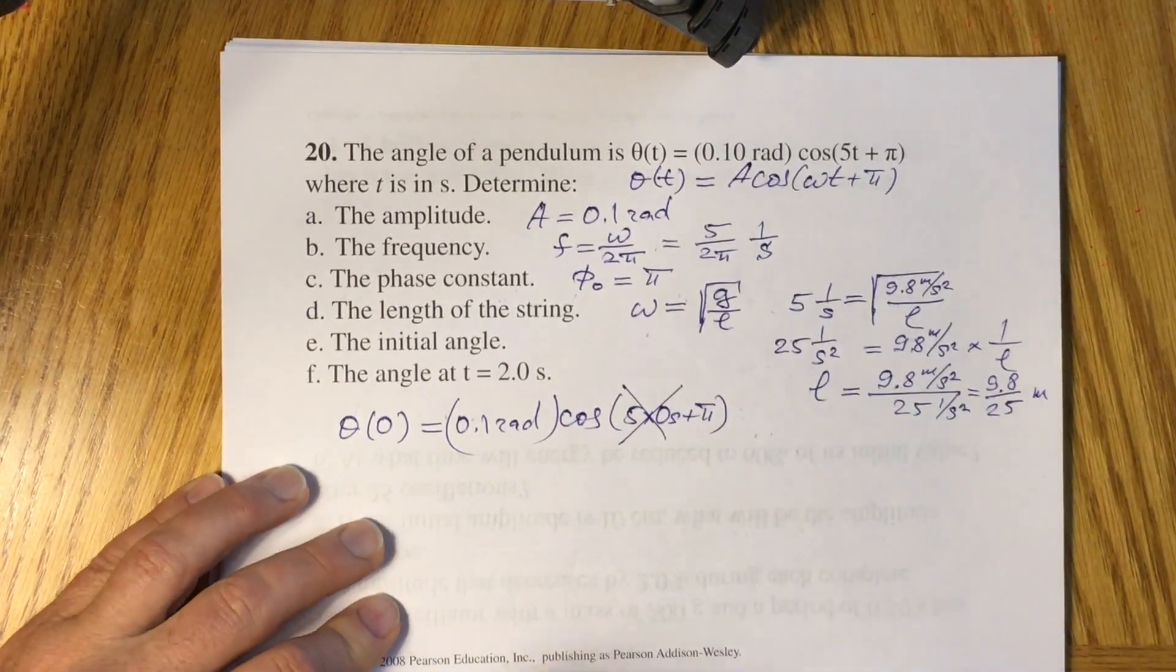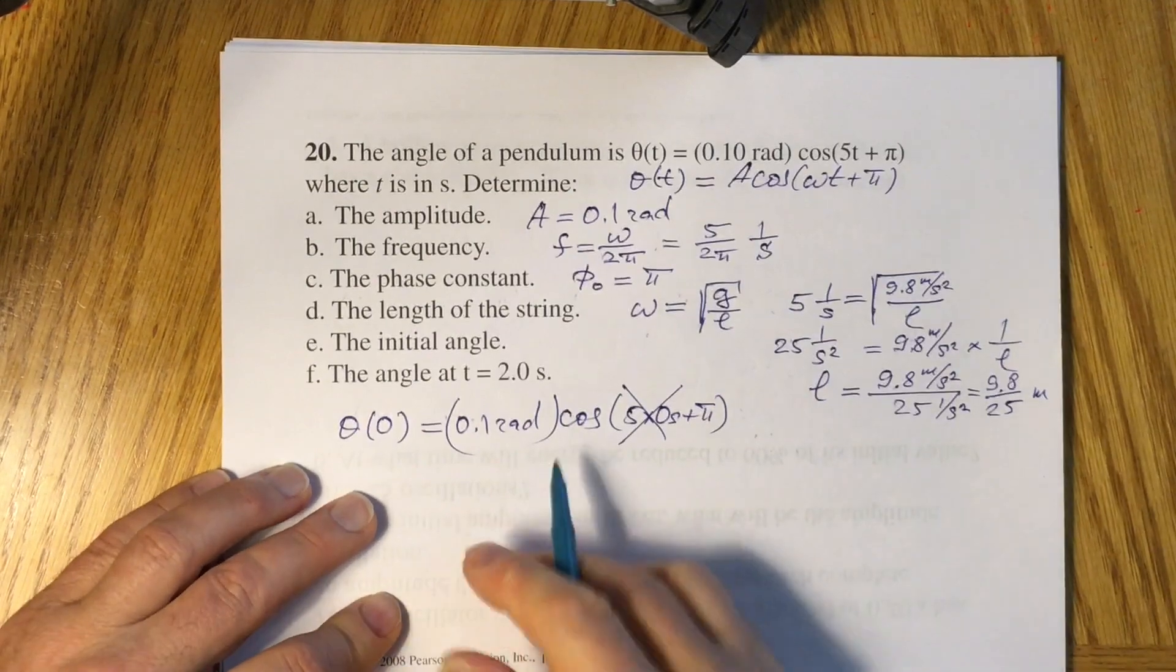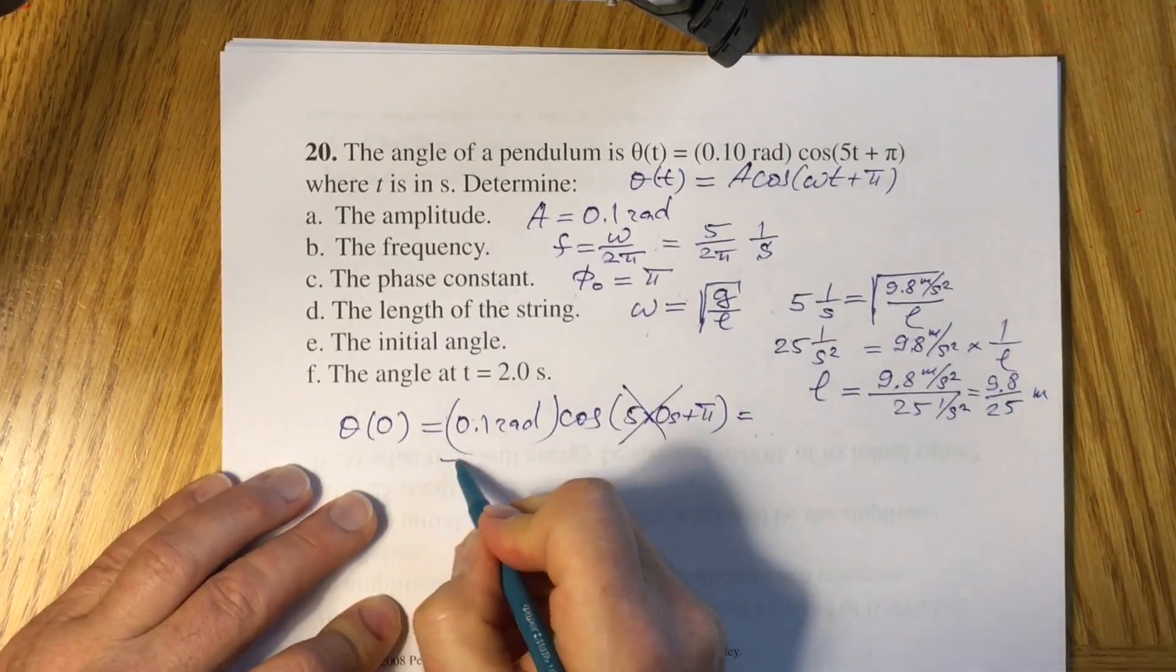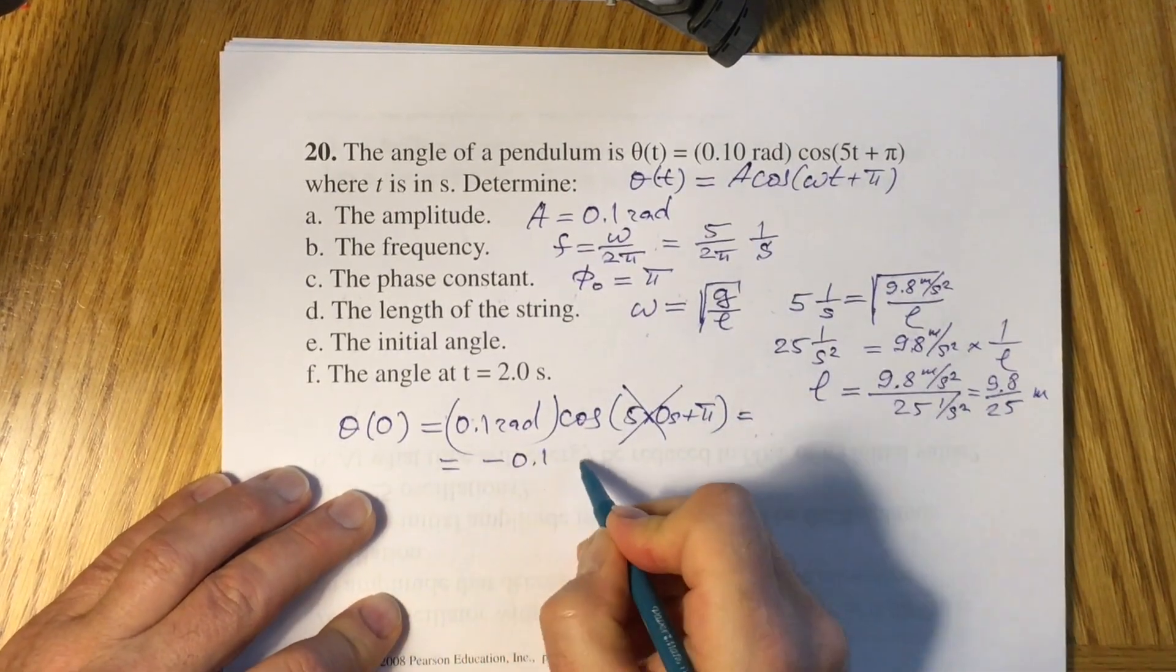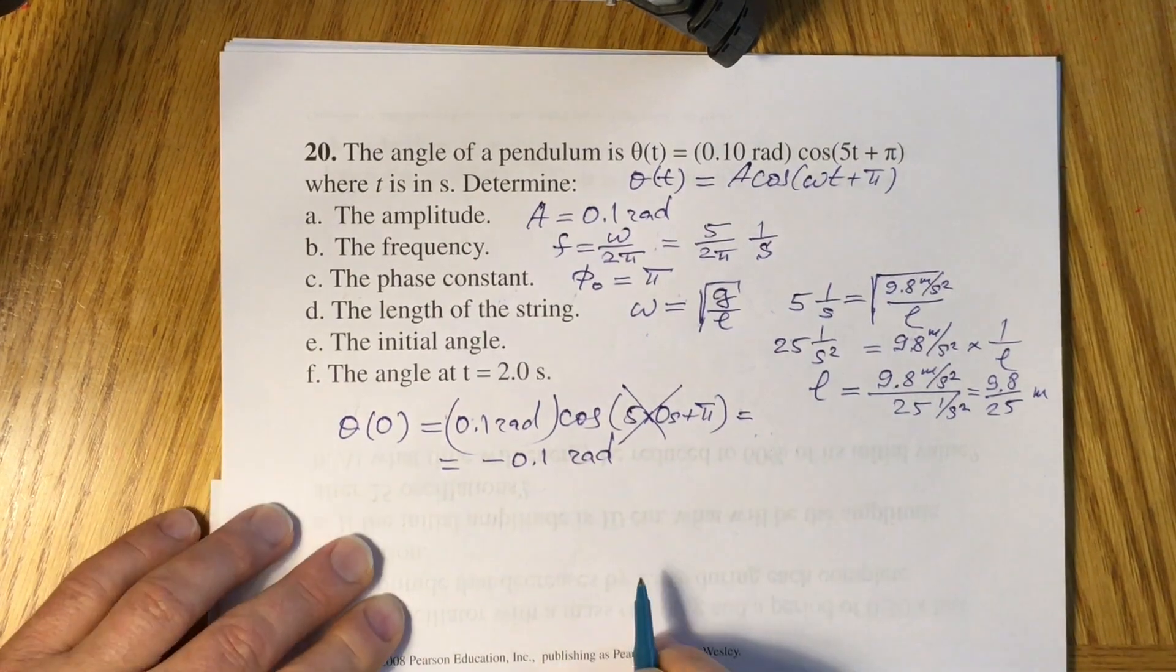Multiplication by 0 does give you 0. Cosine of pi is negative 1, so you will have minus 0.1 radians. This is your initial angle.